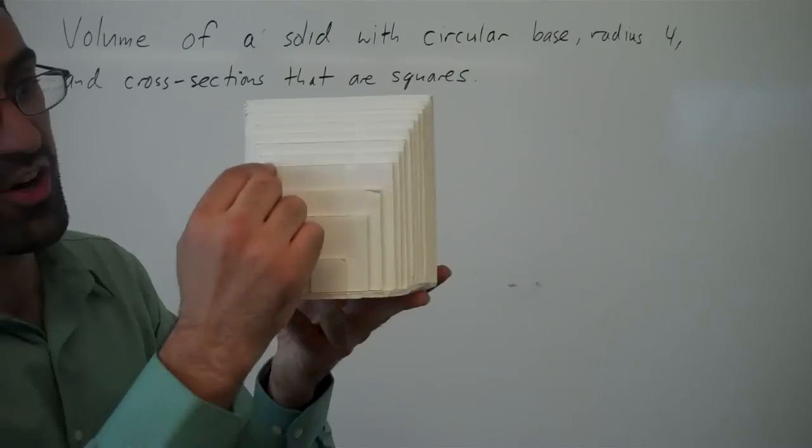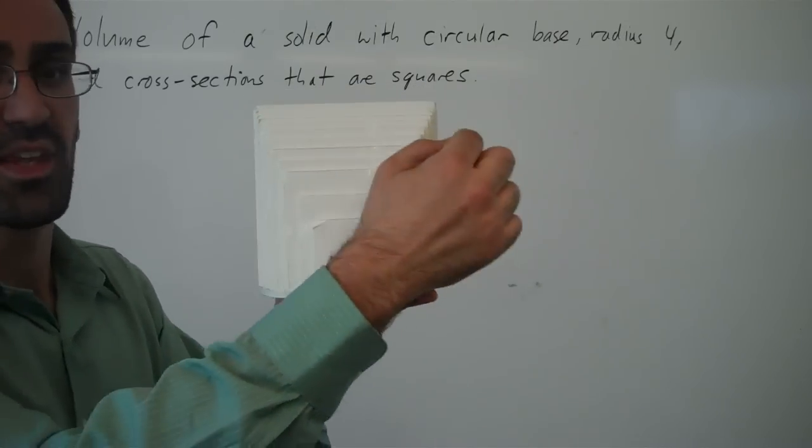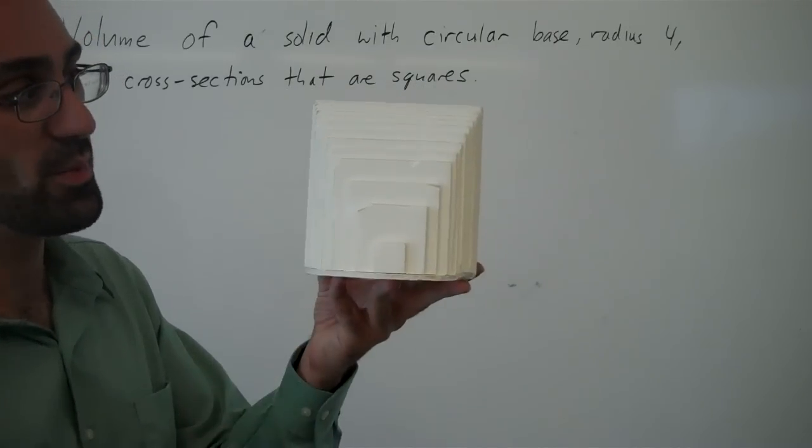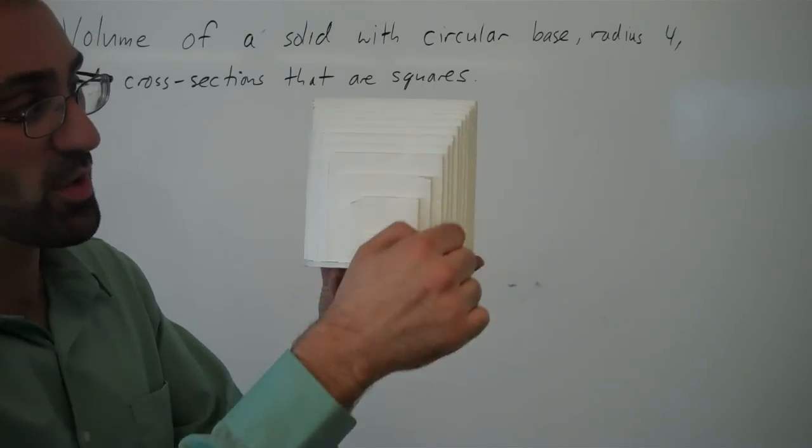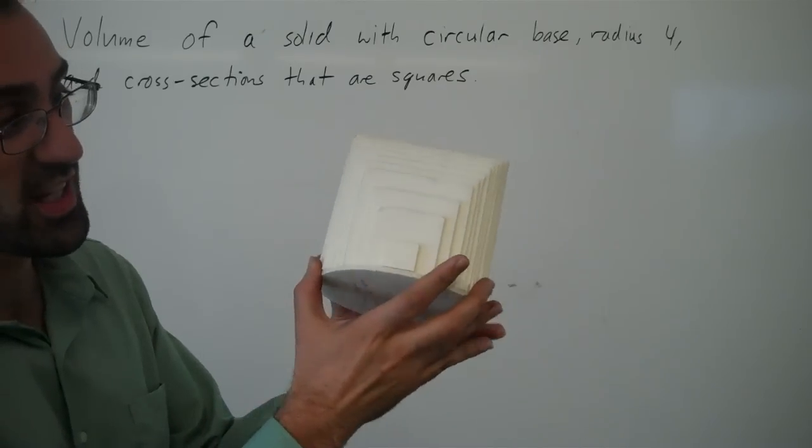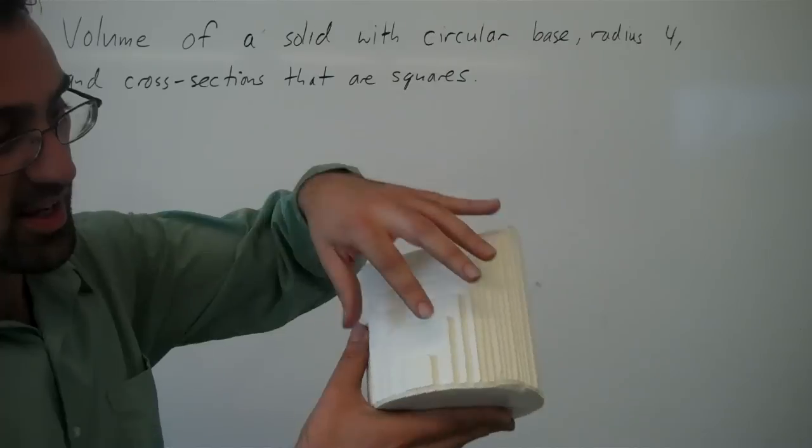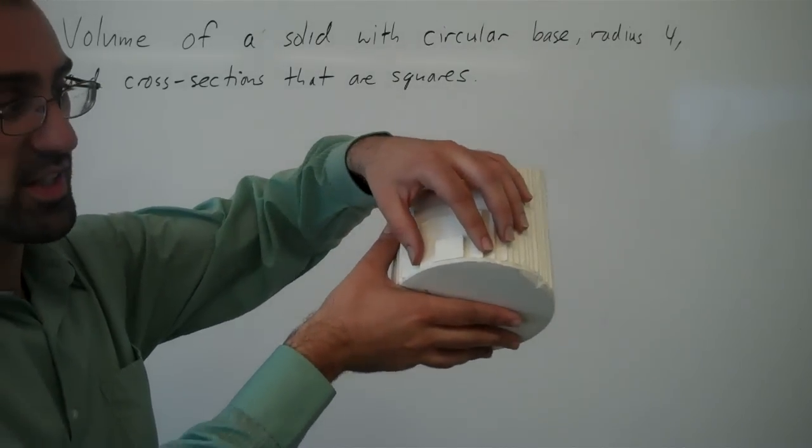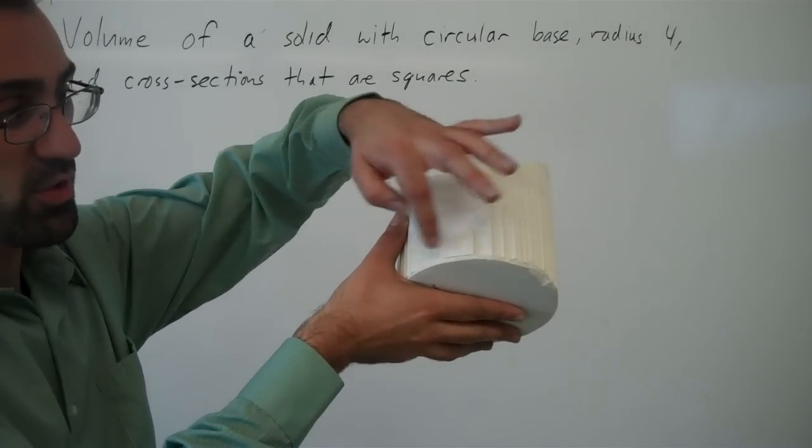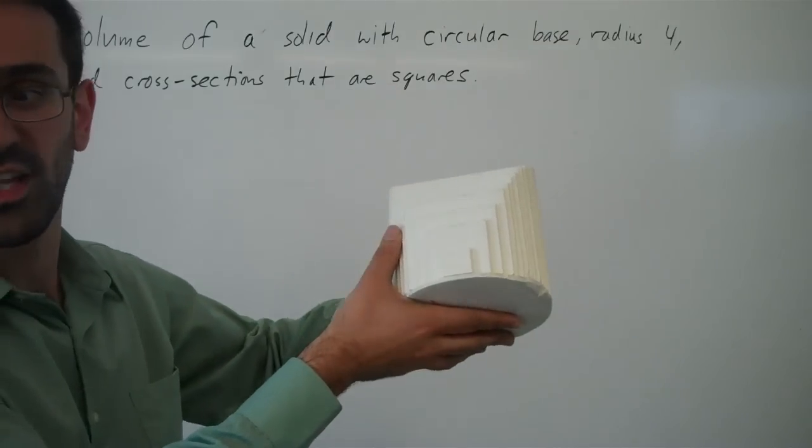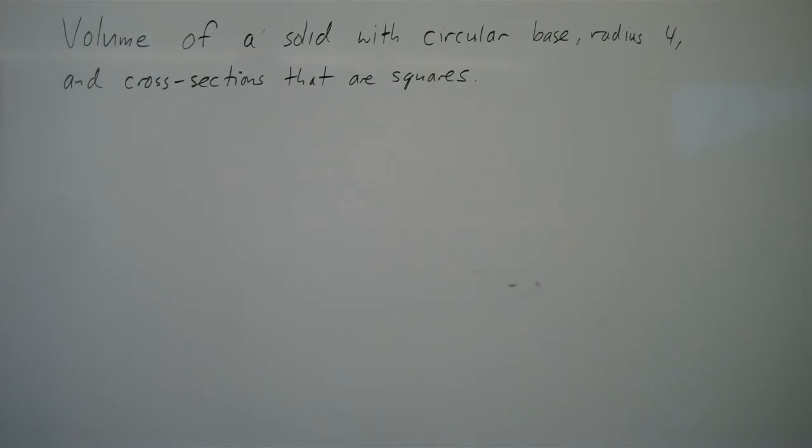And here you can see all these different squares. We get a different square depending on where we're slicing, because the width of the square corresponds with the width of the circle at that point. So let's see how that works.